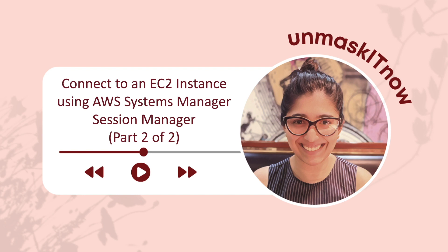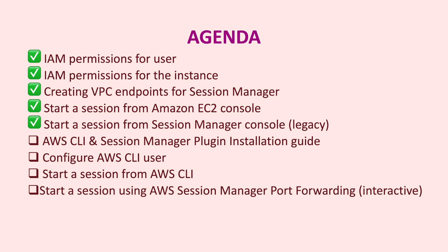Today's video is part two of a two-part series on how to connect to an EC2 Windows instance using AWS Systems Manager Session Manager. If you haven't already checked the first part yet, please click on the link appearing on your screen and watch part one of this video before you proceed. Part one of the series has already covered the prerequisites for this video — defining the necessary IAM permissions for both the user and the instance, and also creation of the VPC interface endpoints for Session Manager.